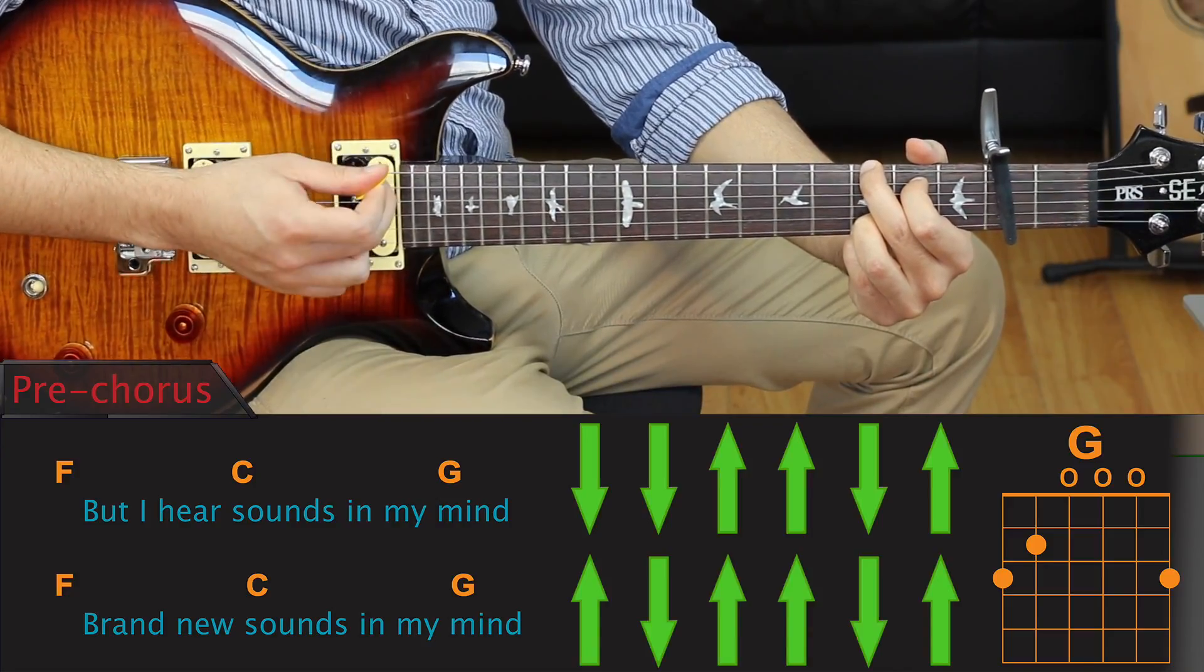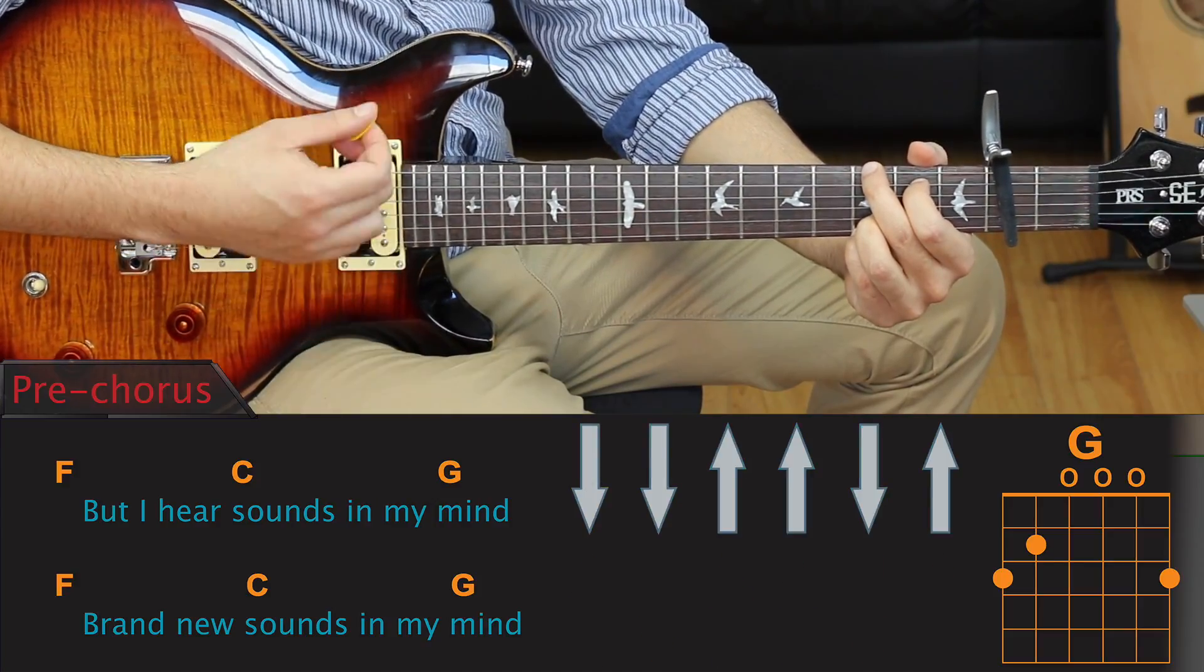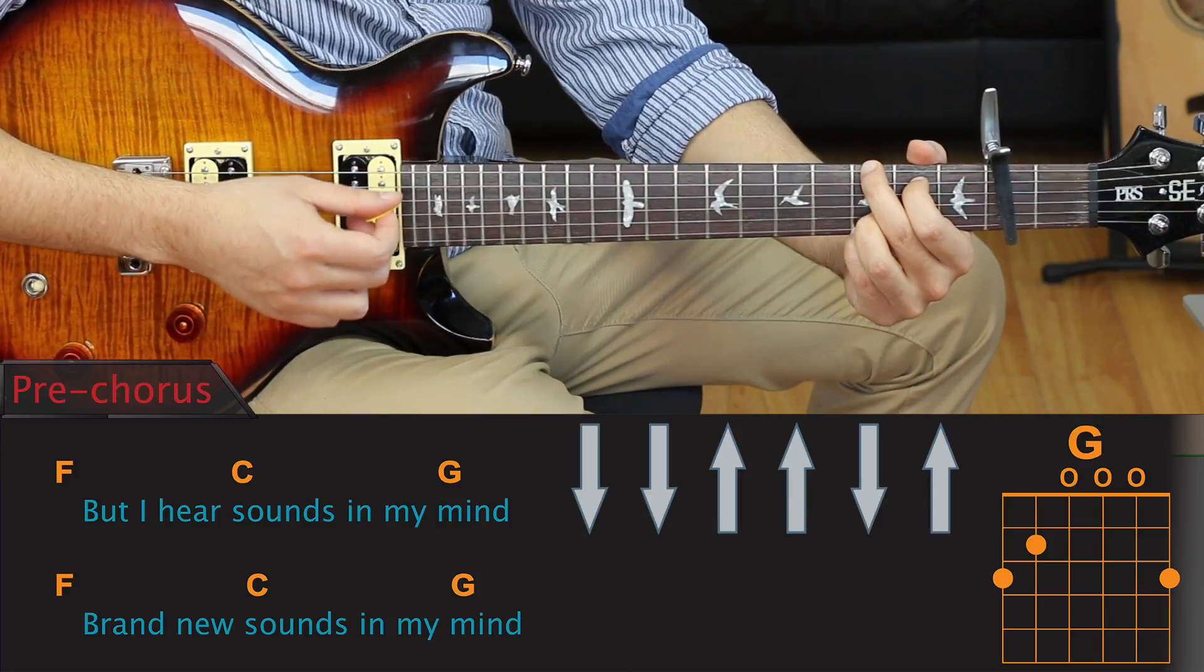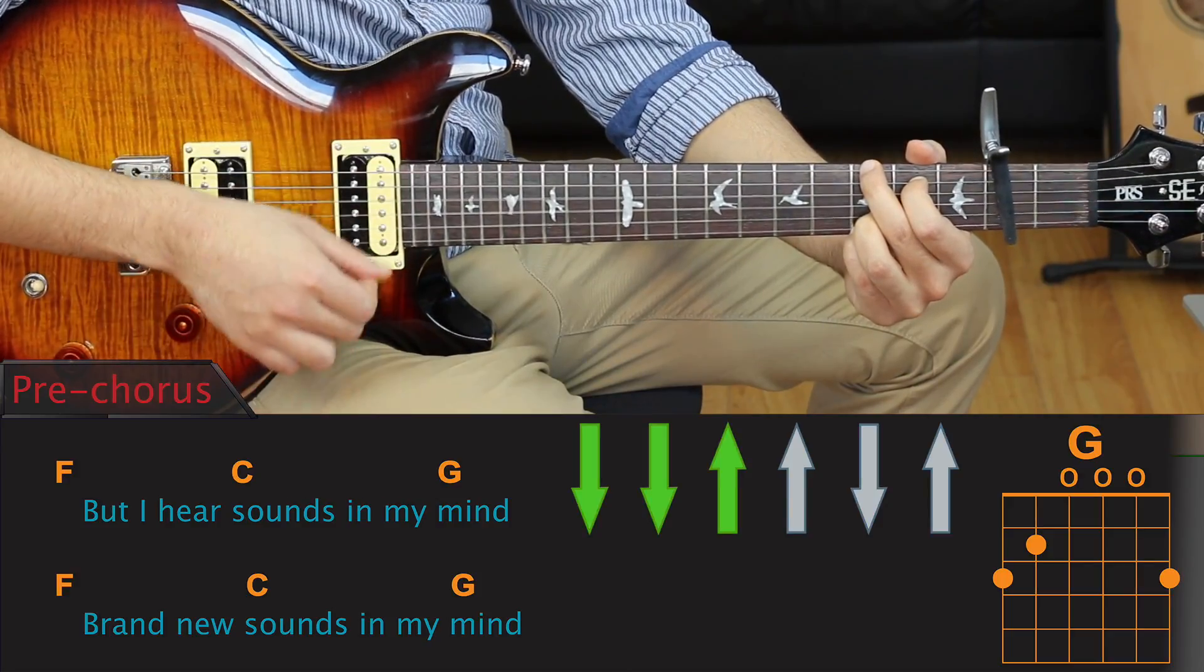Now, this may seem pretty daunting at first, but if we divide the strumming pattern in half, you'll notice that the first half is identical to how we strum the F and the C chords. Down, down, up, up, down, up.